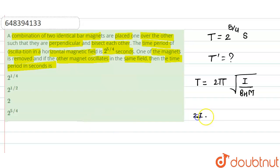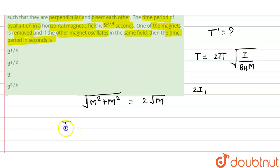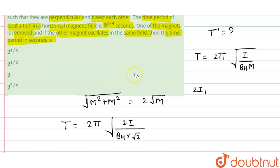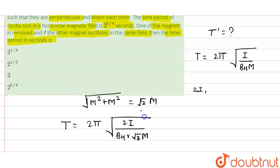For the first case with two magnets, the total moment of inertia is 2I. Since both magnets are identical with individual magnetic moment M, the resultant magnetic moment is √(M² + M²) = √2·M. So the expression for T becomes T = 2π√(2I / (B·√2·M)).